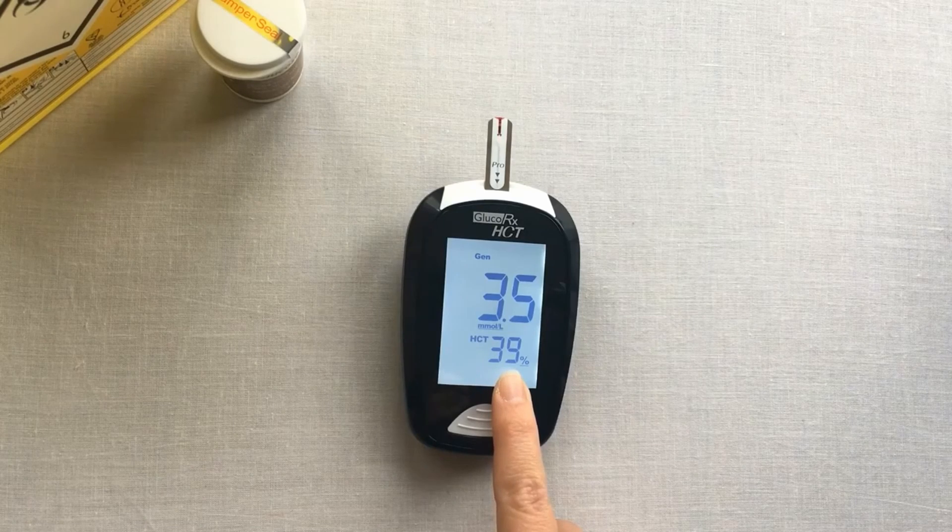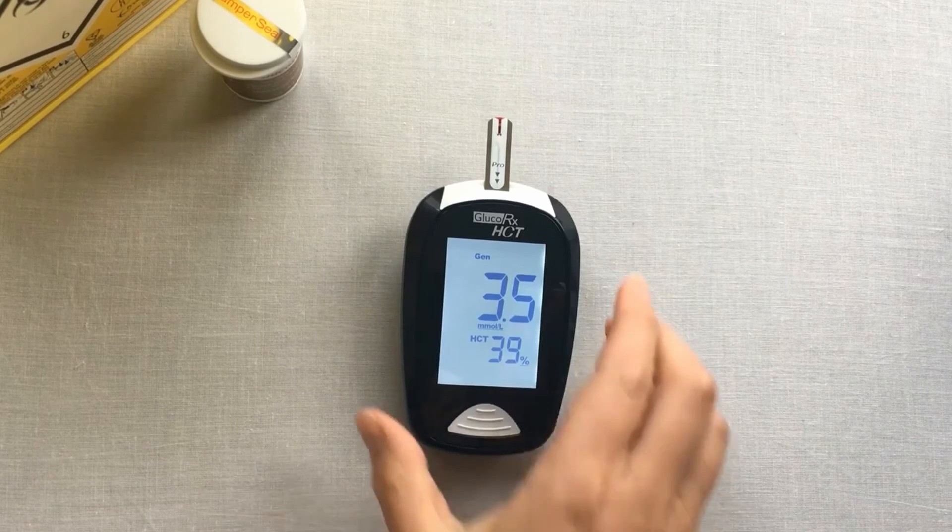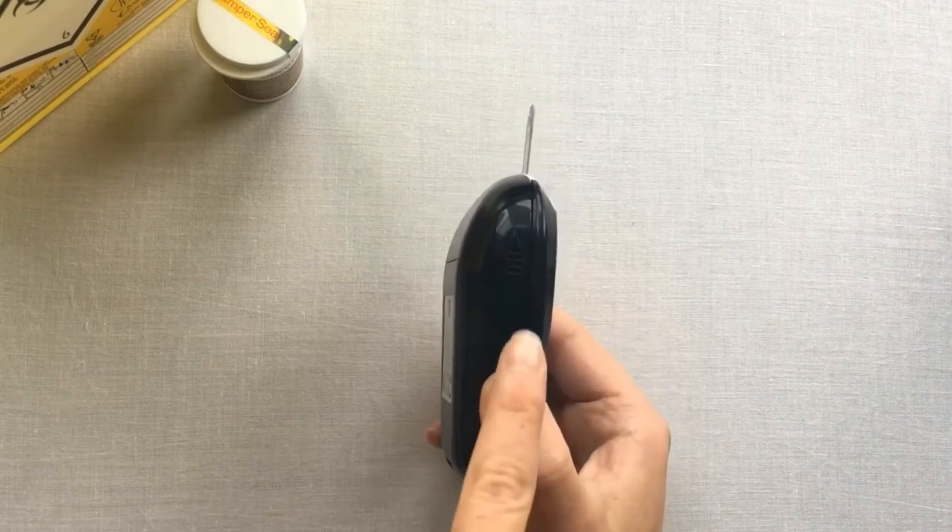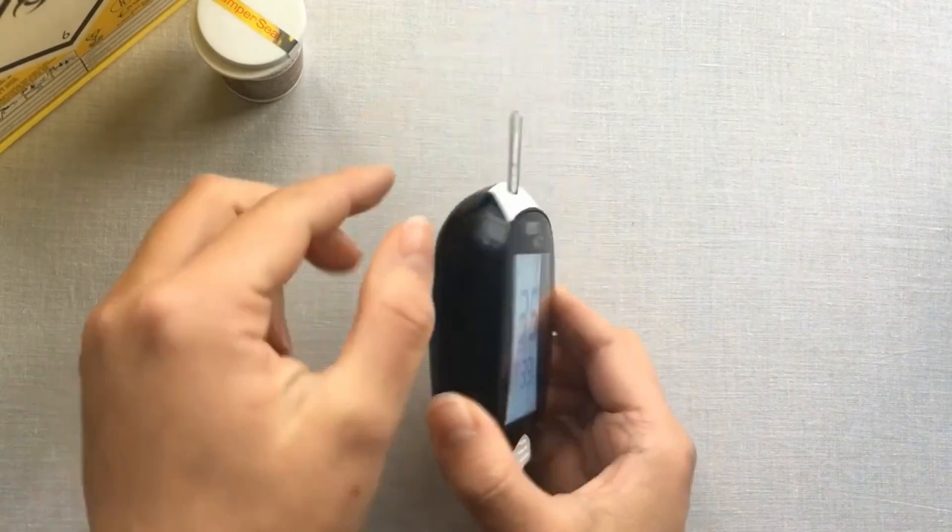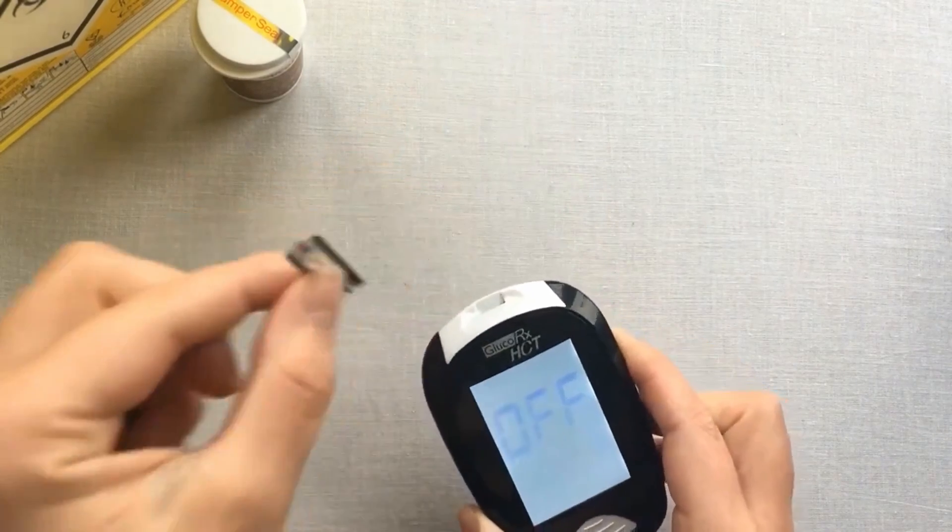You can either manually remove the test strip or you can use the strip ejector button. Please ensure you dispose of the strip and lancet into the sharps bin.